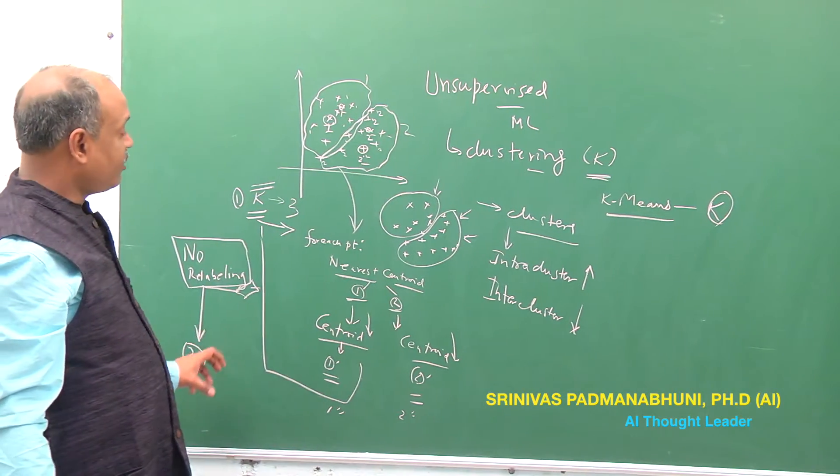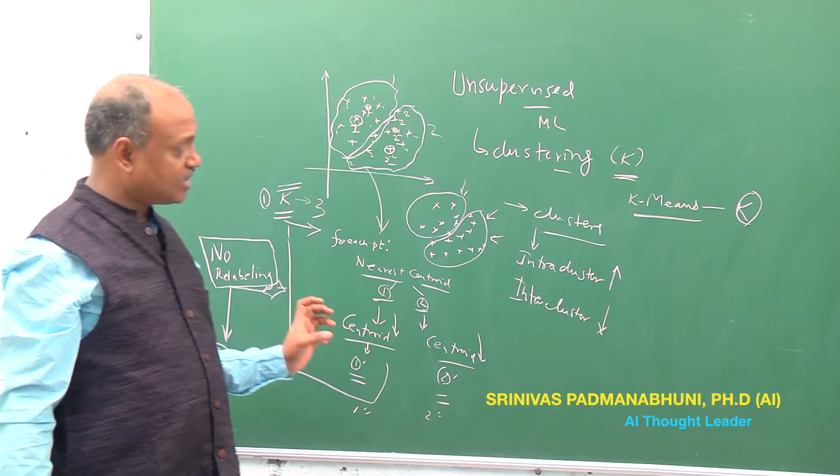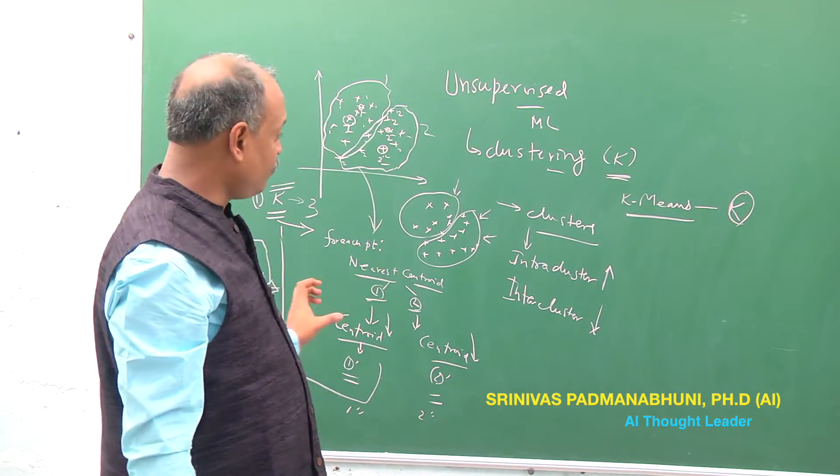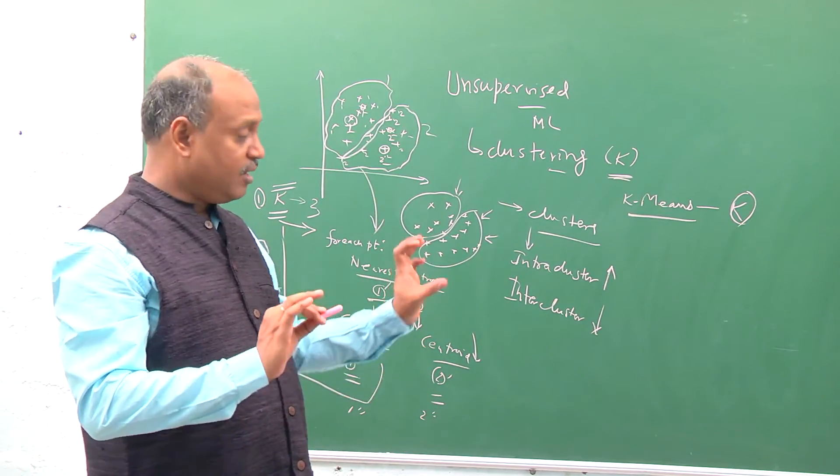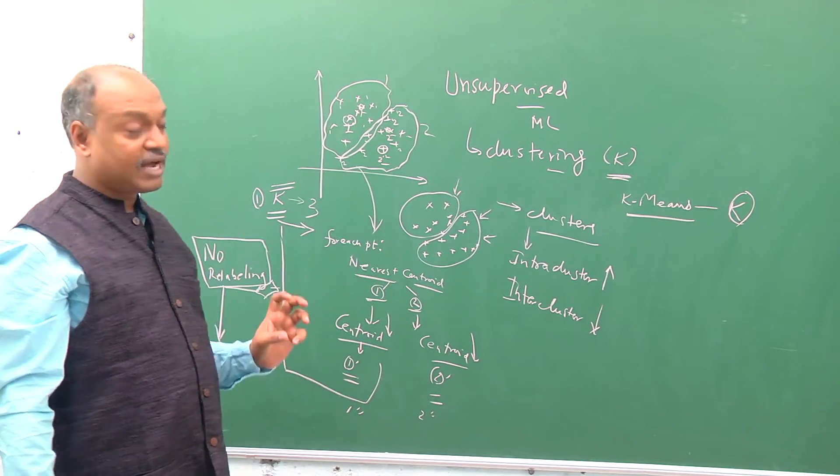We ultimately get a proper assignment of two clusters, cluster one and cluster two, at the end of it where it's stable and there's no relabeling happening. K-means clustering in that sense is a powerful but simple technique for identifying clusters within the original raw input data without having to explicitly label any data.